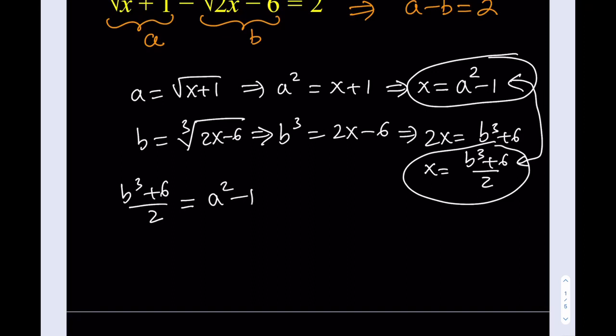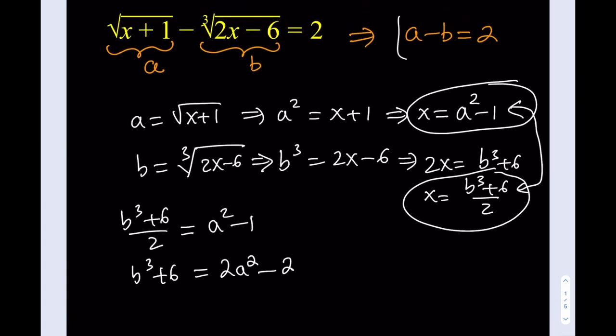So how can I proceed from here? Well, I can multiply both sides by 2. That's going to give me B cubed plus 6 equals 2A squared minus 2. So what else can I do? Well, in addition to this equation, I also have something else, don't I? Let's not forget about this. That was our first thing. So in addition to this, I have A minus B equals 2.